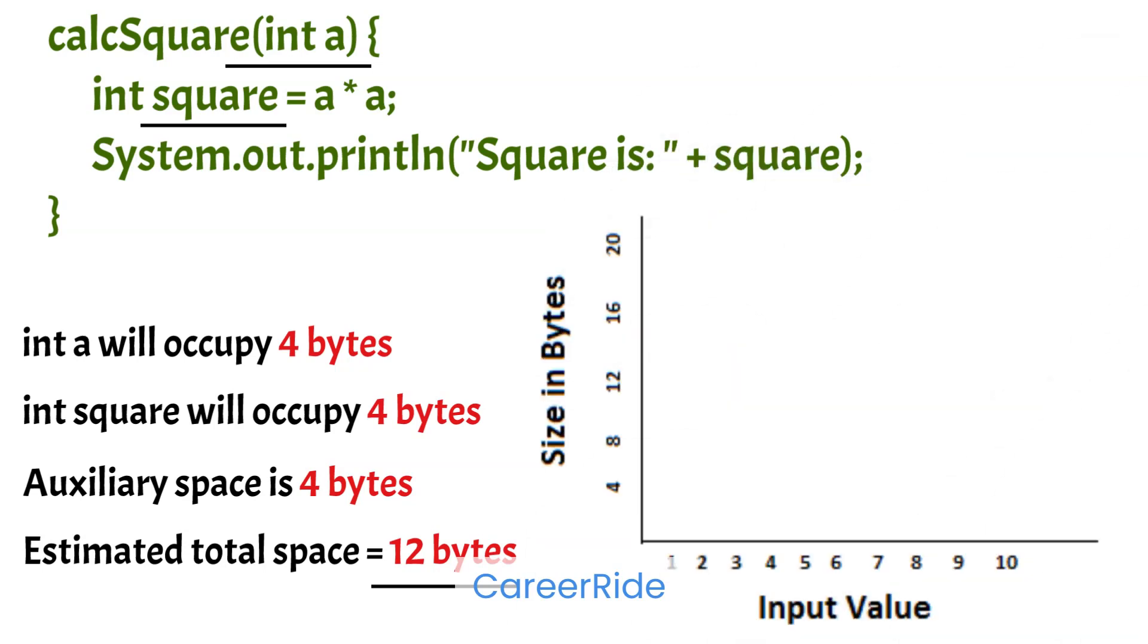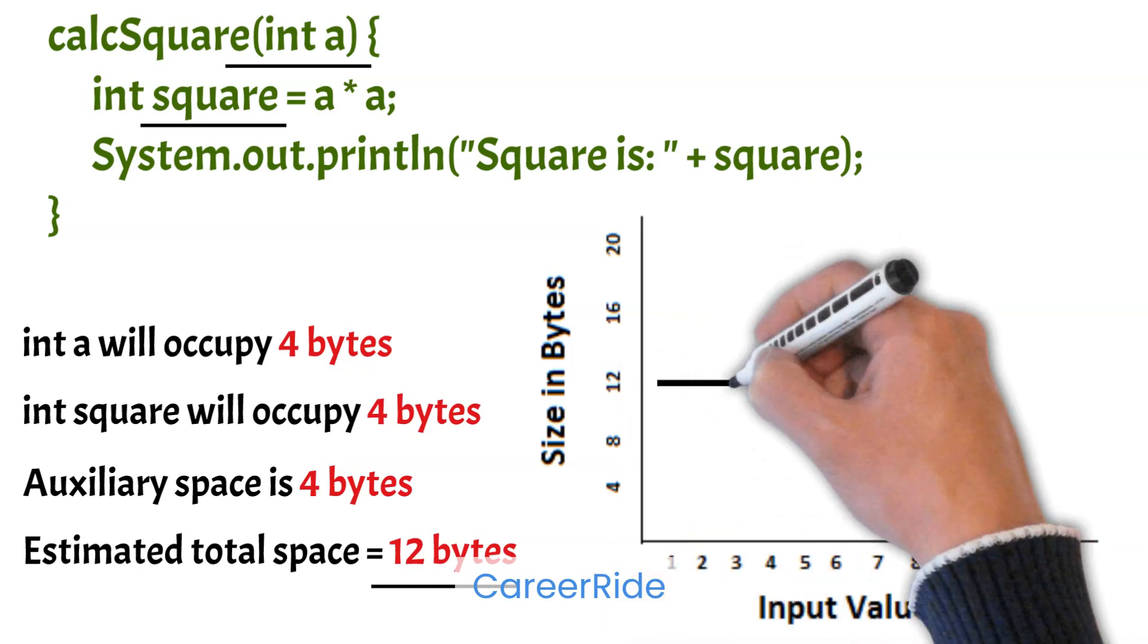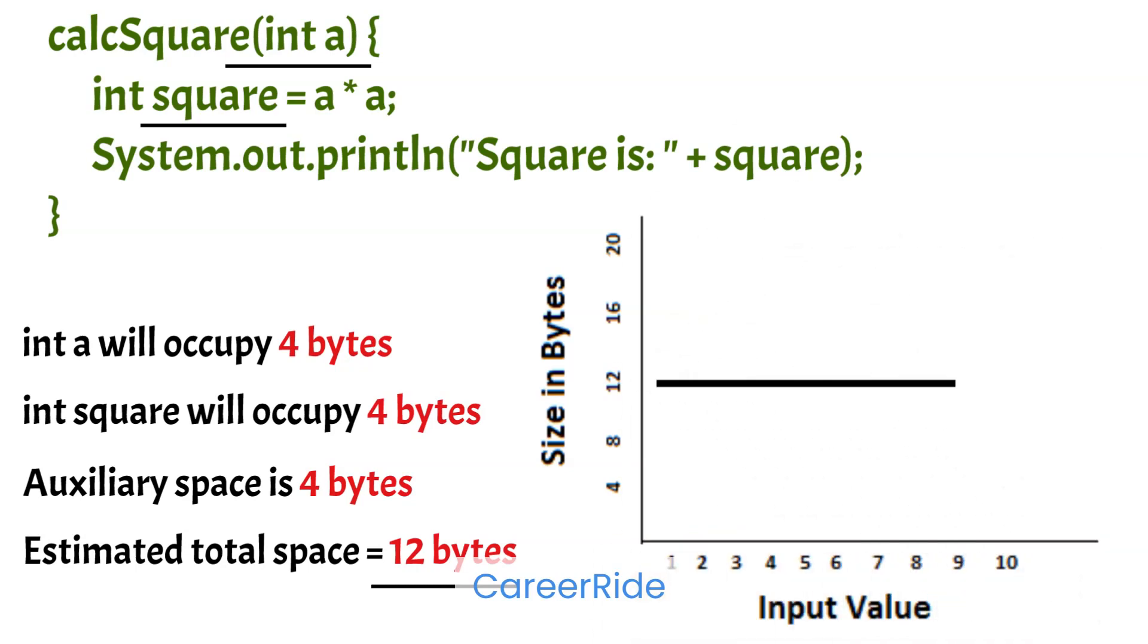We can also represent this type of algorithm in a graph. So here you can see the line is straight irrespective of input value. This type of algorithm is called constant space. And in big O term we express constant space as big O of 1. So for fixed size input the space complexity will be a constant, that is big O of 1.